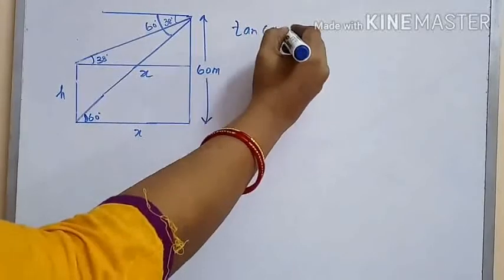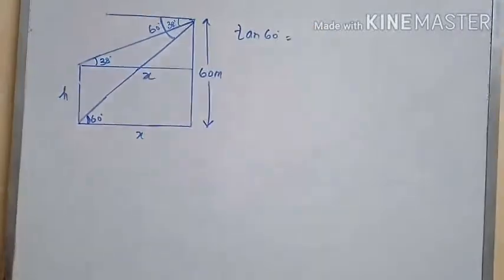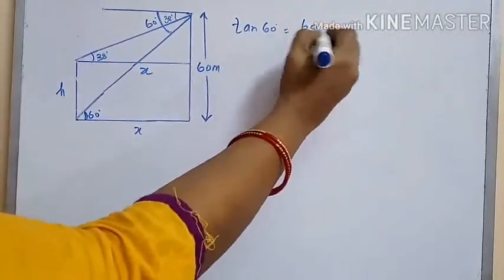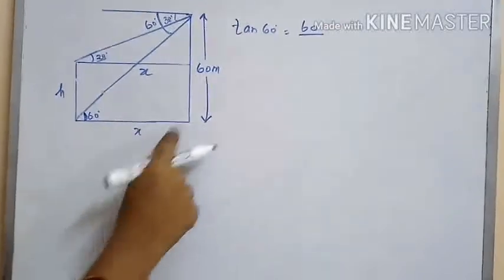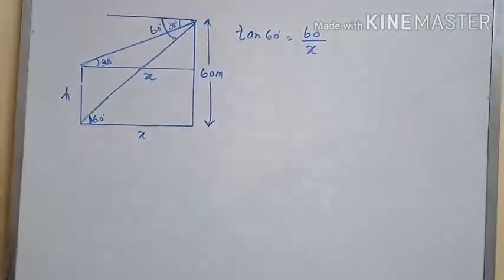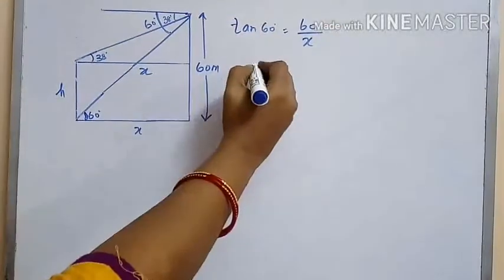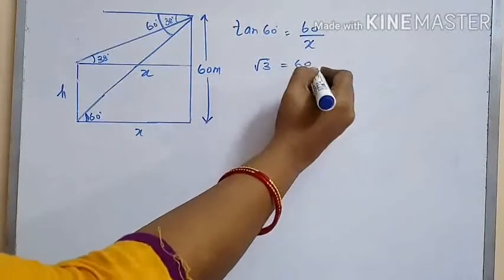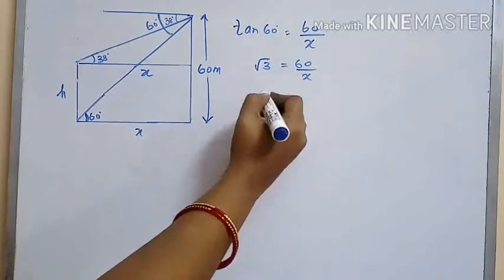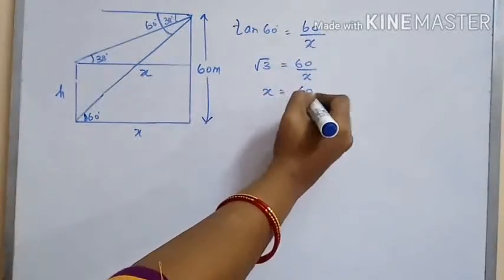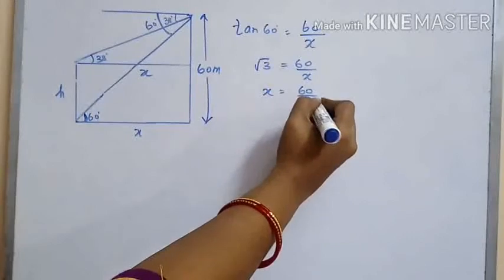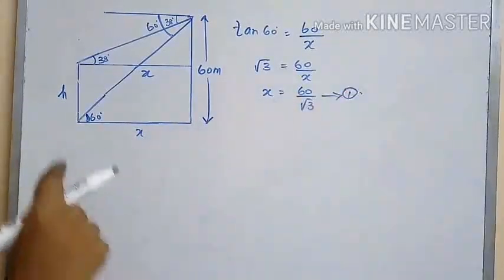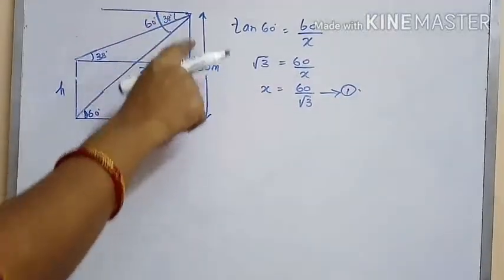From the bigger triangle, tan 60 = opposite side (60) divided by adjacent side (x). We know tan 60 = √3, so √3 = 60 / x, therefore x = 60 / √3. Mark this as equation 1.